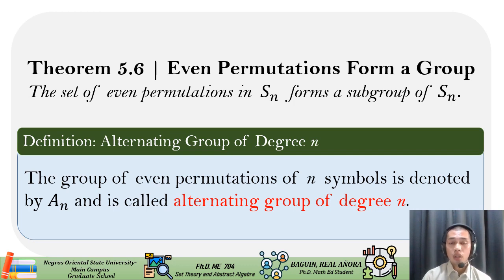Definition, alternating group of degree n. The group of even permutations of n symbols is denoted by A sub n and is called alternating group of degree n.